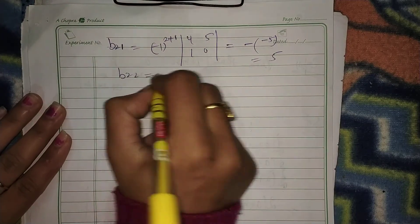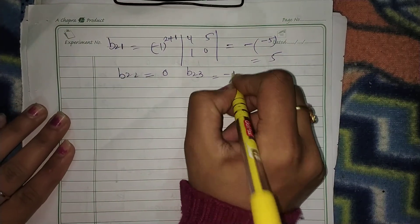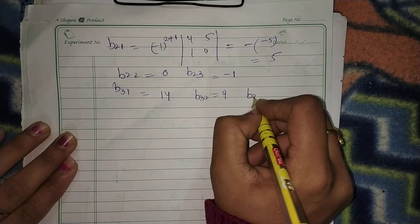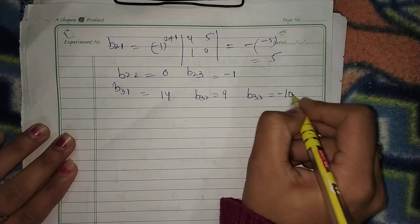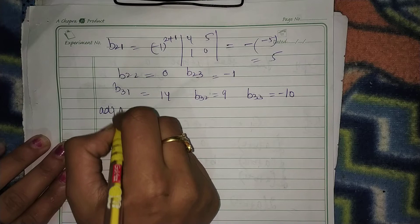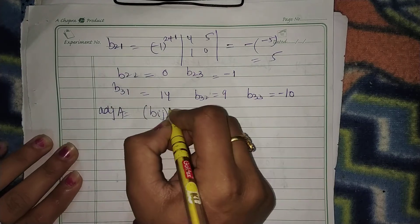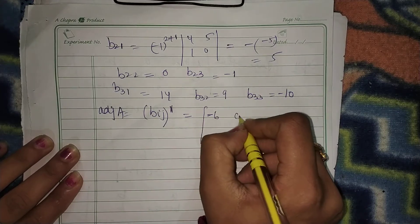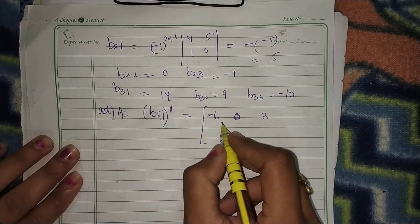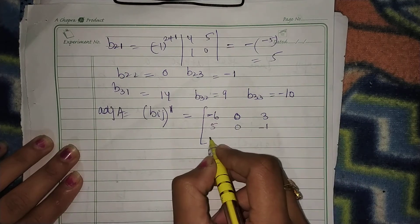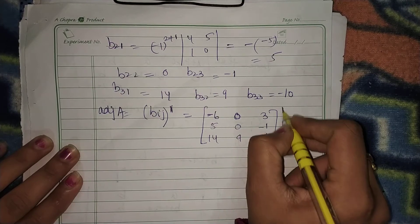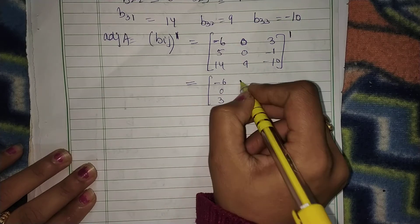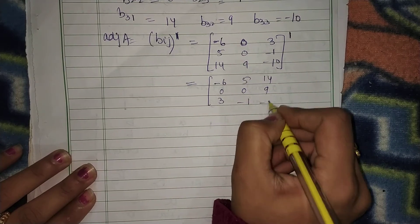B22 gives the value 0, and completing all cofactors: B11=-6, B12=0, B13=3, B21=5, B22=0, B23=-1, B31=14, B32=9, B33=-10. So the adjoint of A is the transpose of this cofactor matrix. Taking the transpose: adjoint of A = [[-6, 5, 14], [0, 0, 9], [3, -1, -10]].